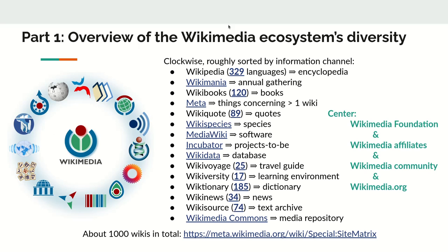The ecosystem is sketched out here. We can start with Wikipedia — all the logos of the different projects are listed here, roughly sorted by information channel. The important thing to know is that some of them exist in multiple languages where the languages are separate, and some like Wikidata exist in multiple languages but all on the same platform. Altogether this is an ecosystem of about 1000 wikis, each with its own rules, its own communities, its own setup — collectively referred to as the Wikimedia ecosystem.